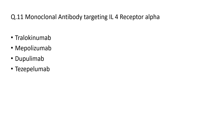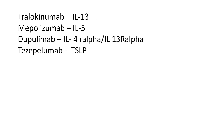Which monoclonal antibody targets IL-4 receptor alpha? The answer is dupilumab — there were many questions on dupilumab this time. Tralokinumab is an IL-13 antagonist, mepolizumab is an IL-5 antagonist, dupilumab is an IL-4 receptor alpha antagonist, and tezepelumab is an anti-TSLP monoclonal antibody. TSLP stands for thymic stromal lymphopoietin.